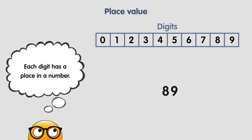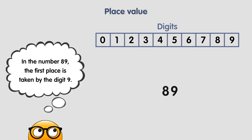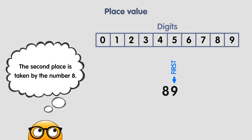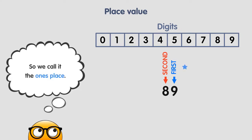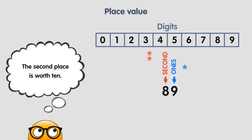Each digit has a place and a value. In the number 89, the first place is taken by the digit 9, and the second place is taken by the digit 8. Each place is worth something different — the first place is worth 1, so we call it the 1's place. The second place is worth 10, so we call it the 10's place.